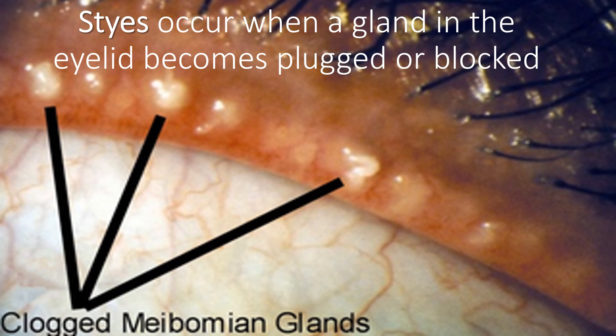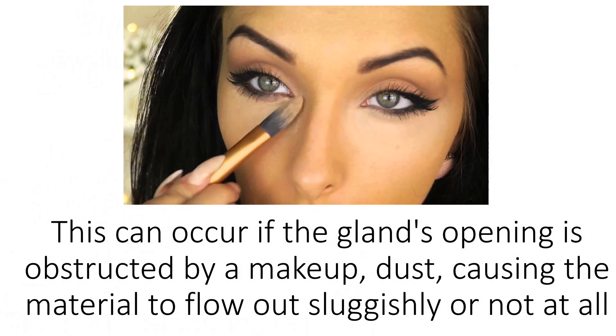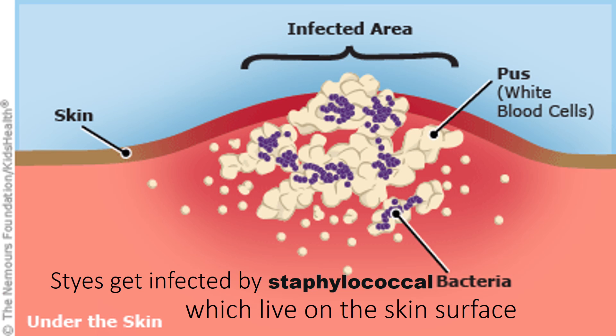Styes occur when a gland in the eyelid becomes plugged or blocked. This can occur if the gland's opening is obstructed by makeup or dust, causing the material to flow out sluggishly or not at all. Styes get infected by staphylococcal bacteria, which live on the skin surface.